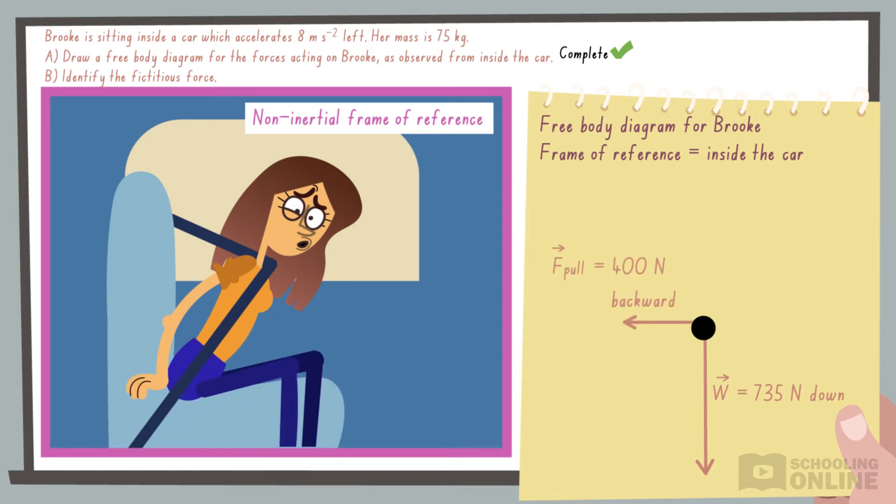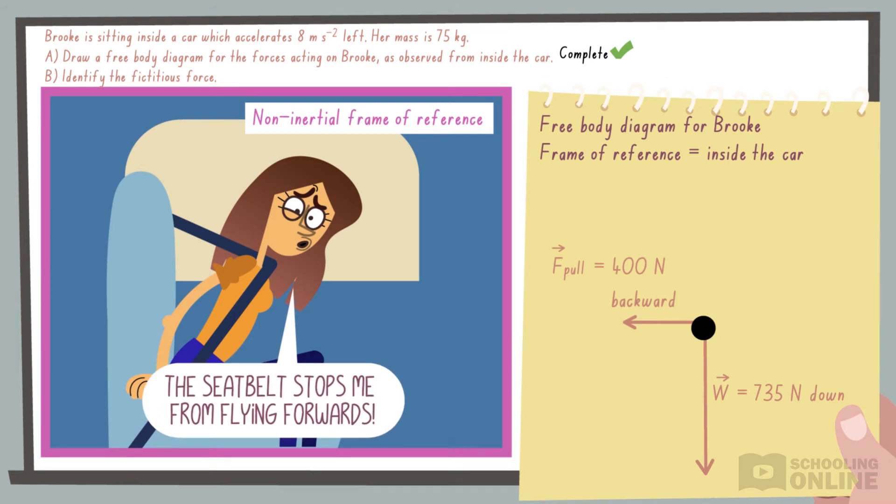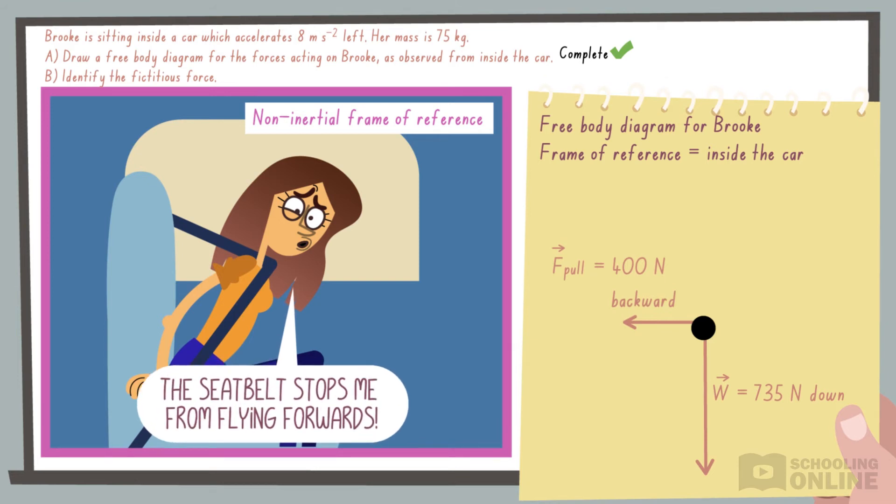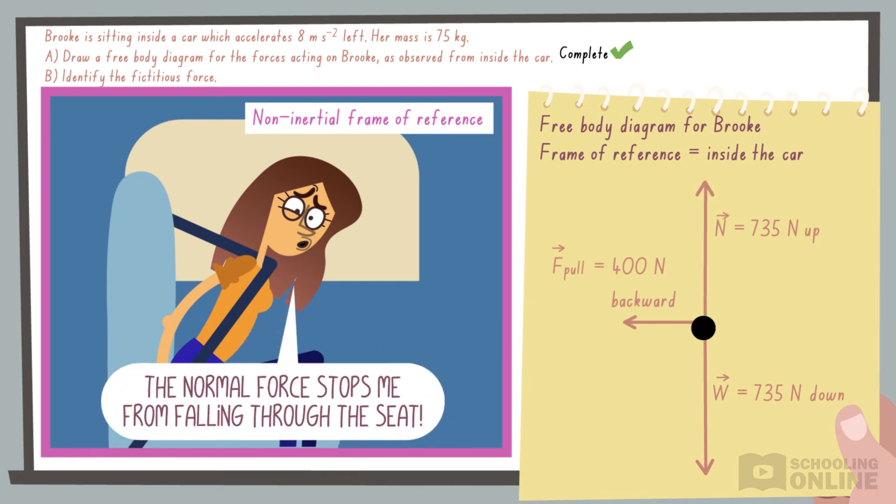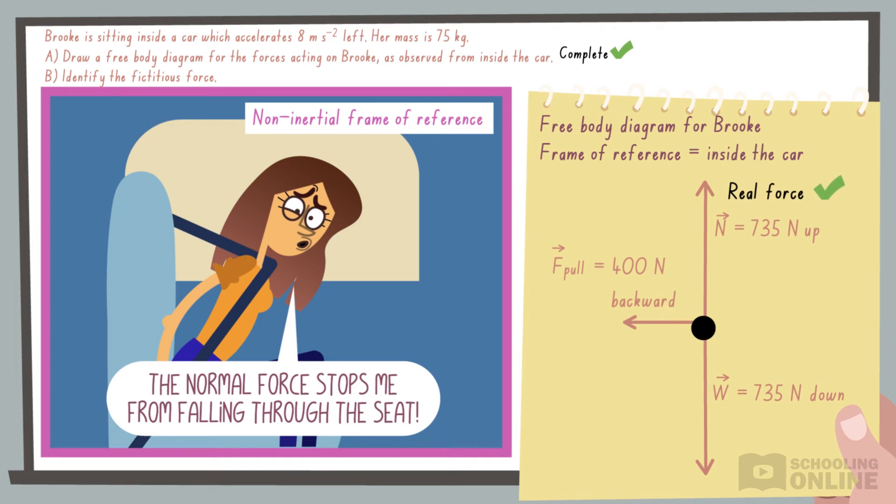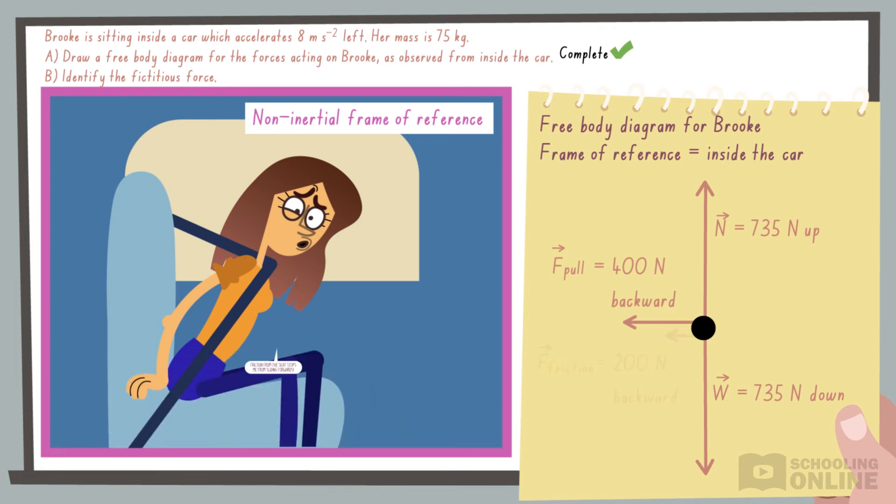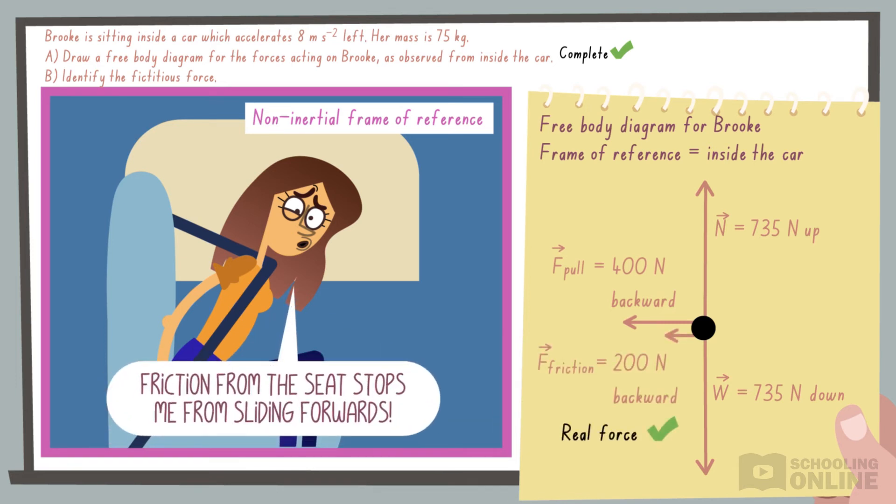The pulling force occurs when Brooke interacts with the seat belt, so it is a real force. The normal force occurs when Brooke interacts with the car seat, so it is a real force. Likewise, friction from the seat is a real force.